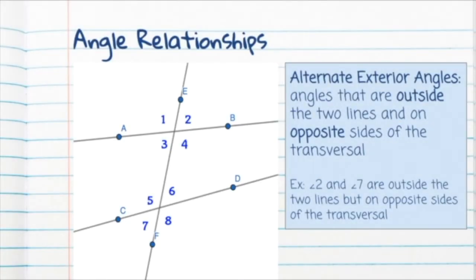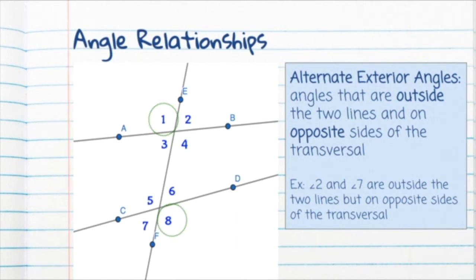We also have alternate exterior angles. These are angles outside of the two lines, and still on opposite sides of the transversal. So angles one and eight are alternate exterior angles, and angles two and seven are alternate exterior angles — they're outside lines AB and CD and on opposite sides of the transversal.